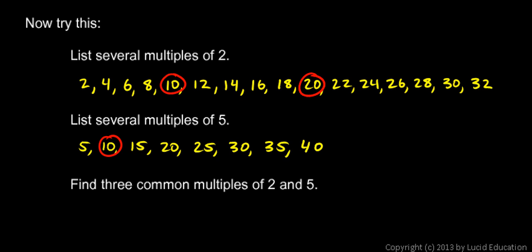And the same happens with 20. 20 shows up in both lists. And you can probably see the next one, 30. So there I have it. Three common multiples of 2 and 5. I'll just write them down here. 10, 20, and 30.